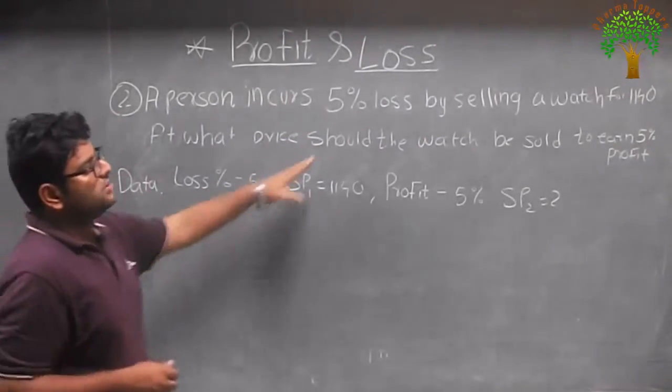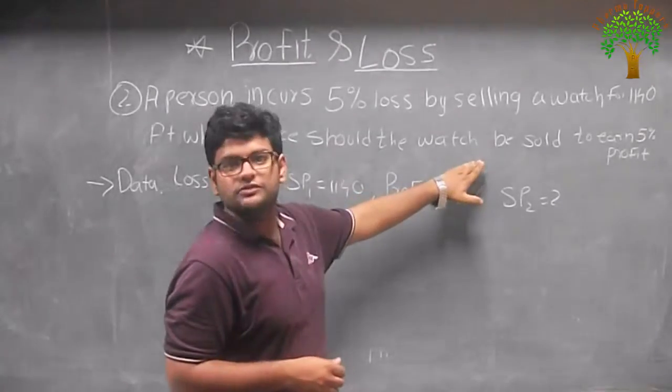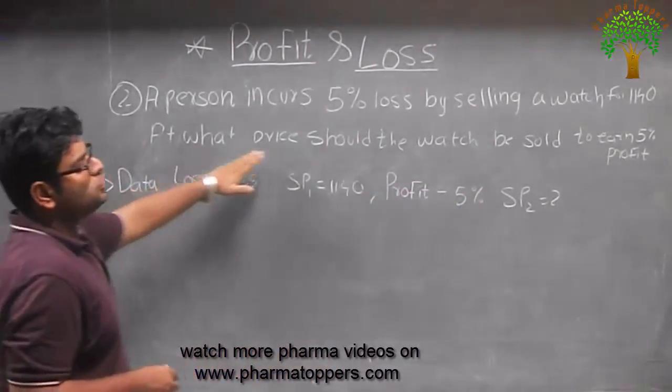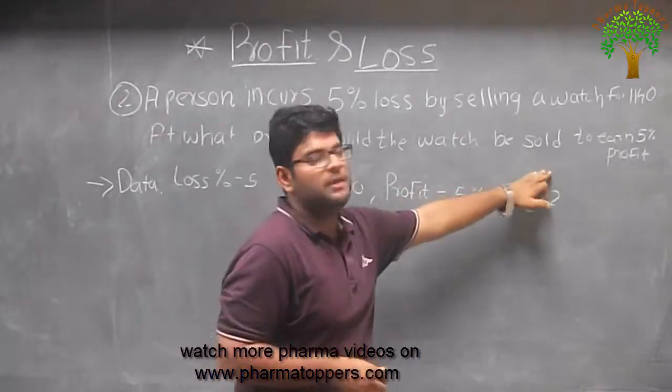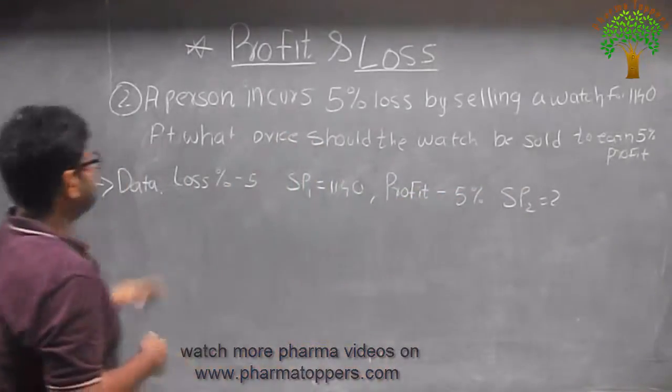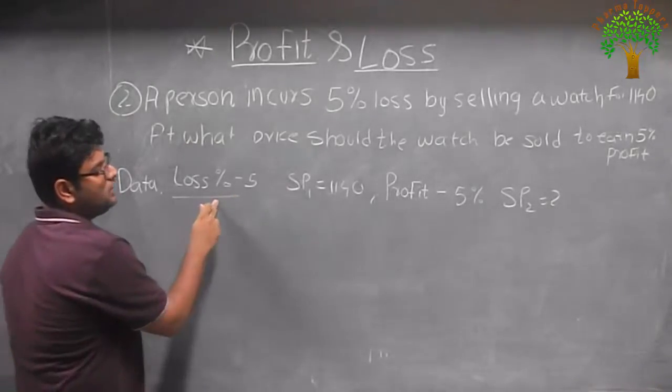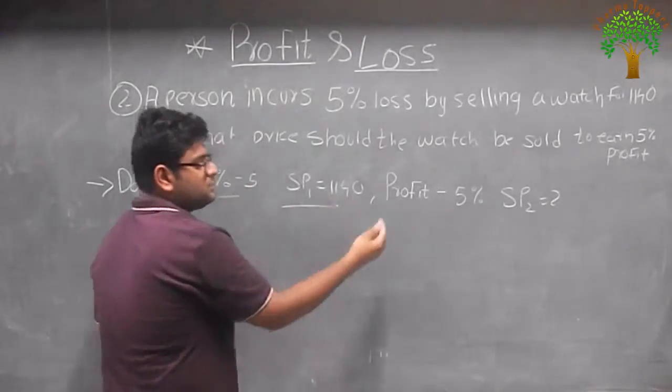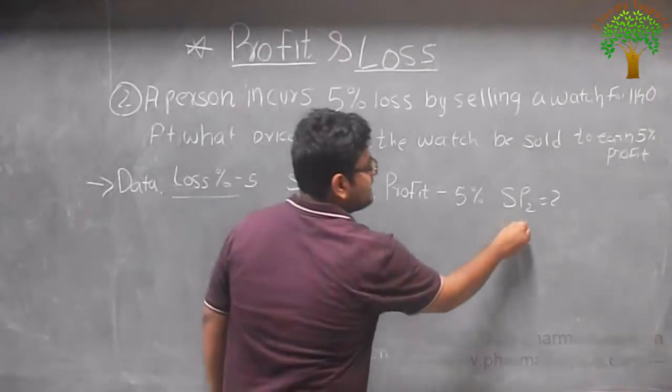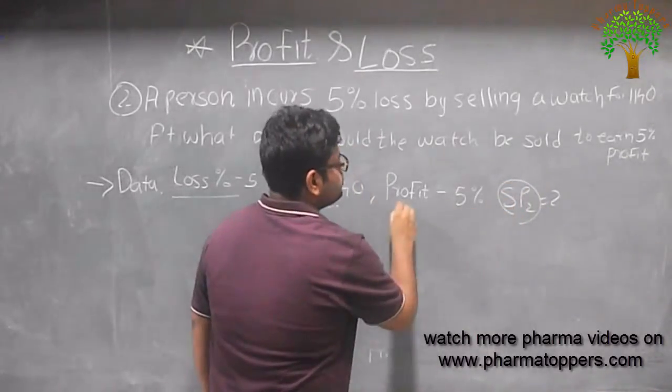A person incurs a 5% loss by selling a watch for 1140 rupees. At what price should the watch be sold to earn a 5% profit? So now let's see what the data has been given. In the first case they have given loss percentage of 5%. A selling price of 1140 and expected they are expecting a new selling price they should get a profit of 5%.